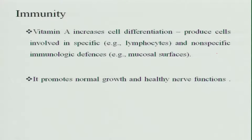Regarding immune function, Vitamin A increases cell differentiation and produces cells involved in specific and non-specific immunological defenses. Lymphocytes are used for immune functions, and mucosal surfaces also help in non-specific immune defenses. Vitamin A promotes normal growth and healthy nerve functions, making it very important for the functioning of the nerves.